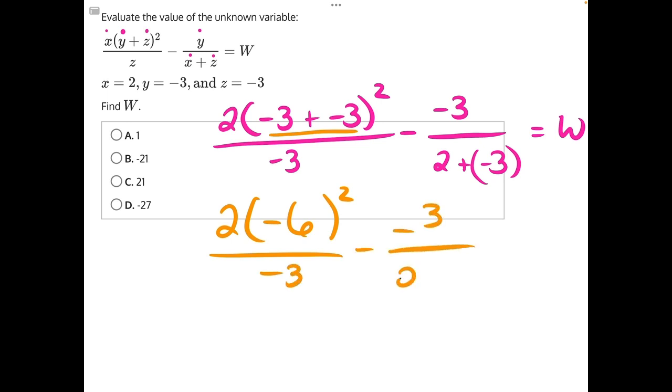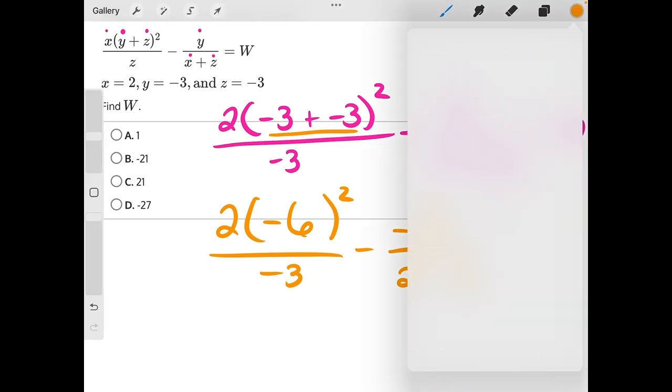I'll go ahead and write everything else out as well. We can go ahead and simplify our signs. Adding a negative is the same as subtracting a positive. So this is 2 minus 3 down here.